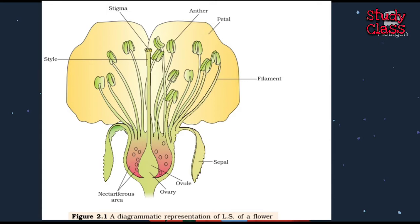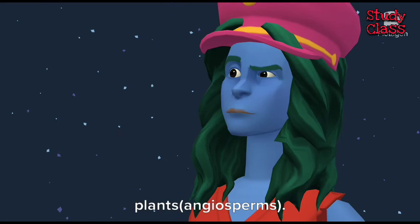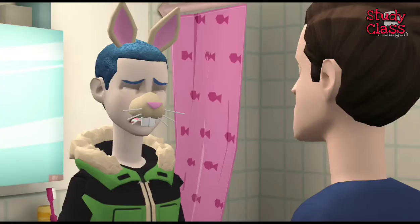In this chapter, let us understand the morphology, structure and the processes of sexual reproduction in flowering plants and angiosperms.